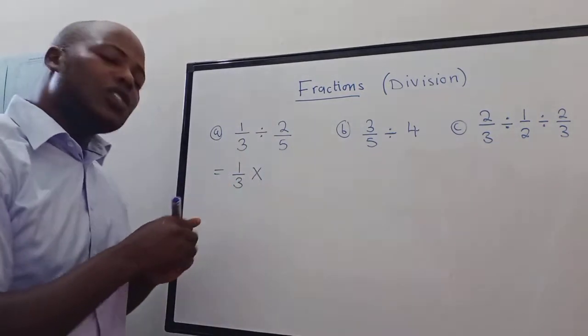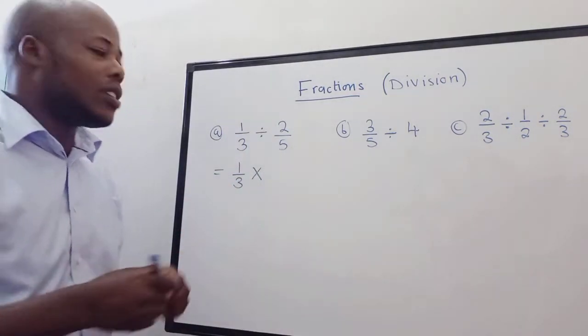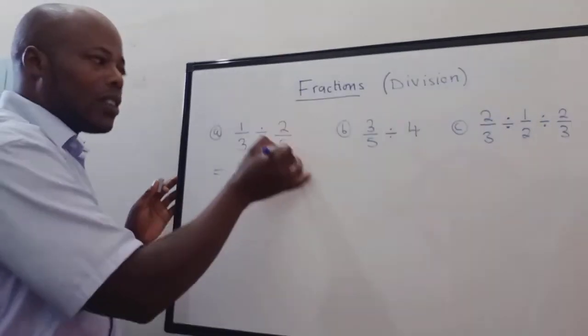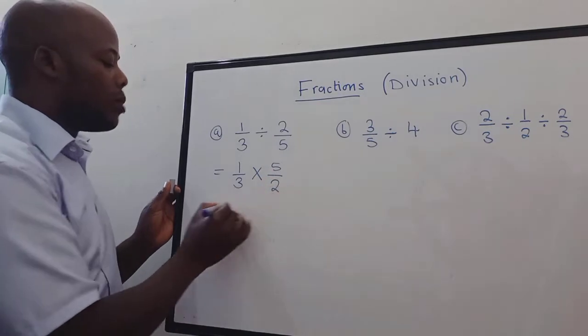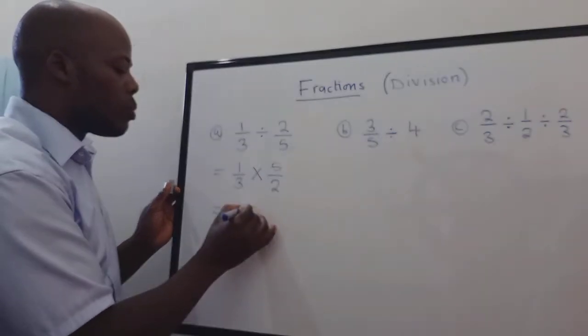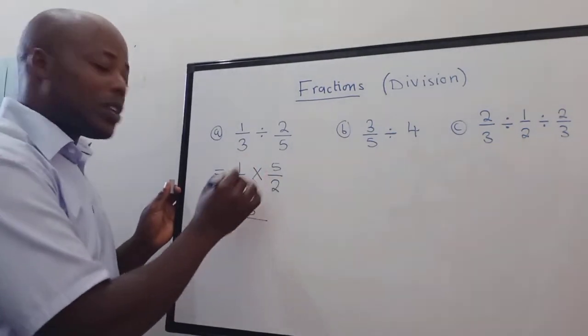Once you change the sign, what do you do next? You reciprocate what is here. The five goes on top and the two comes down. Thereafter you multiply, you do the idea of multiplication right here. So this is our answer.